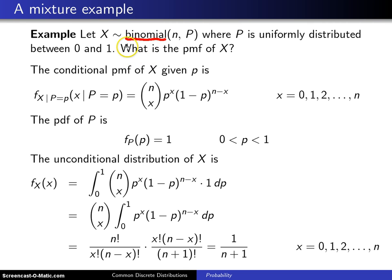So the question is, under these conditions, what is the probability mass function of X? It's still going to be a discrete random variable because it is binomial, but this time P is a random variable.